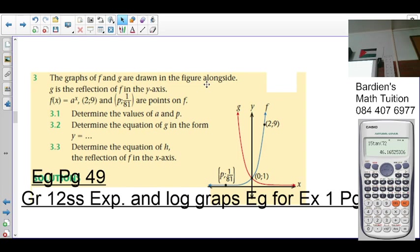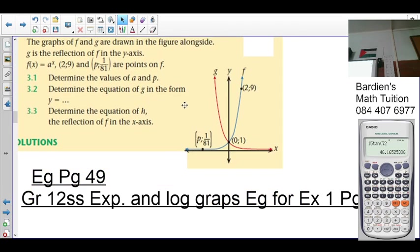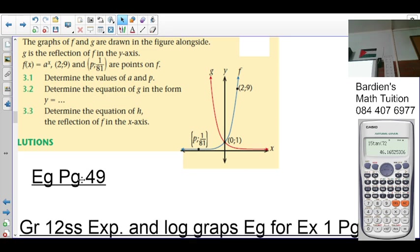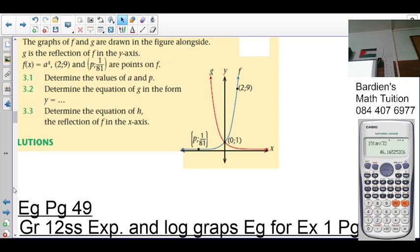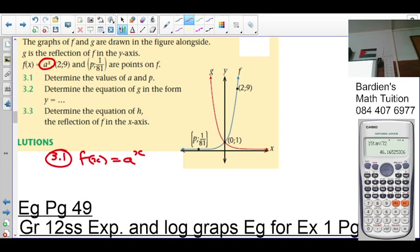This is the third example, also on page 49. Here we have the graphs of F and G drawn in the figure alongside. G is the reflection of F in the y-axis. If something is reflected in the y-axis, what happens? X becomes negative. F of x equals A to the x, (2, 9) and (P, 1/81) are points on here. The question says in 3.1, determine the value of A and P. Firstly, A is from the formula F of x equals A to the x. So how do I solve for A? That's one unknown. I need to substitute one point lying on this graph.